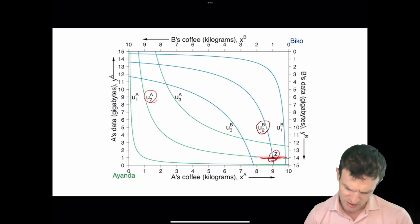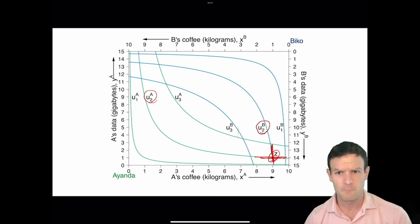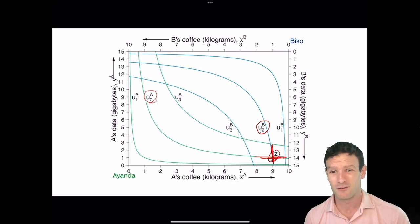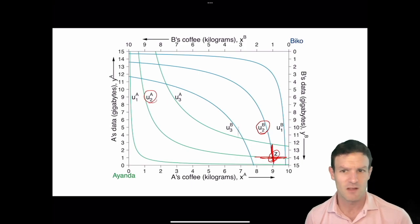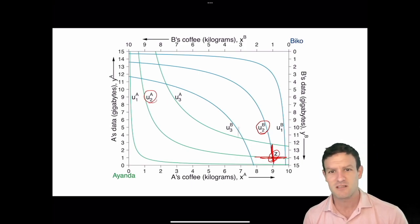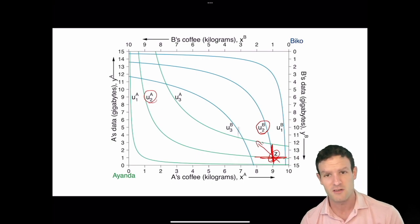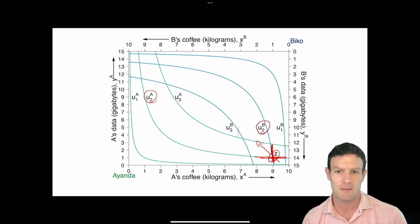If we look at the same thing for Biko, his indifference curves are very steep — he would pay a lot of Y in order to get an additional unit of X. This means there are opportunities for them to do better; there were opportunities for them to both improve.